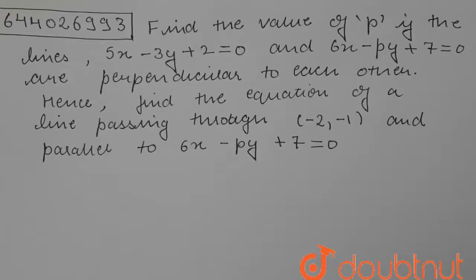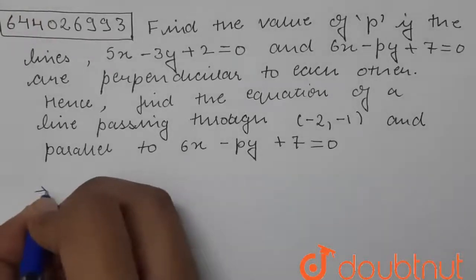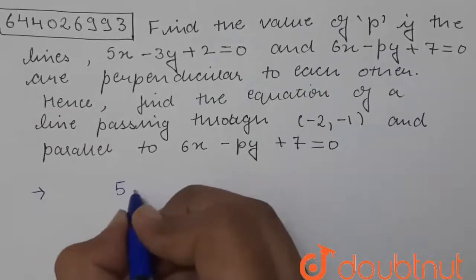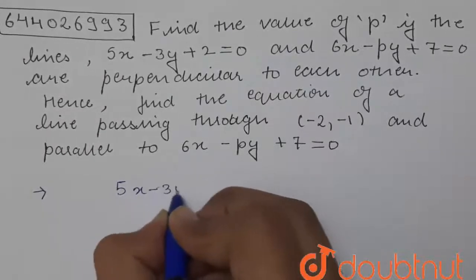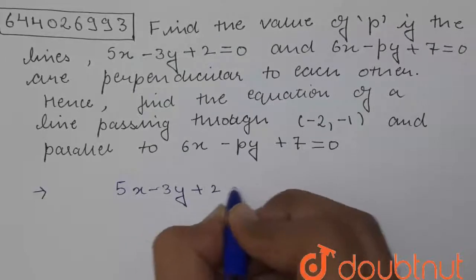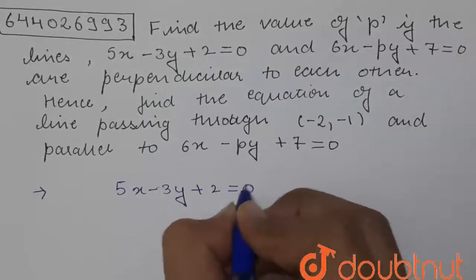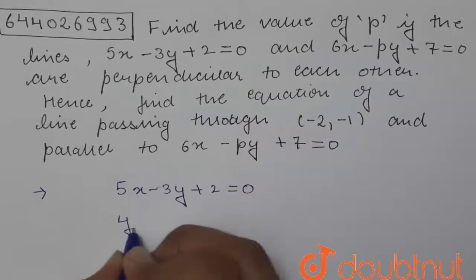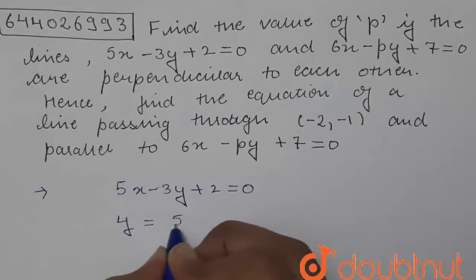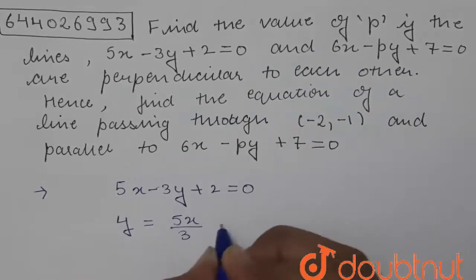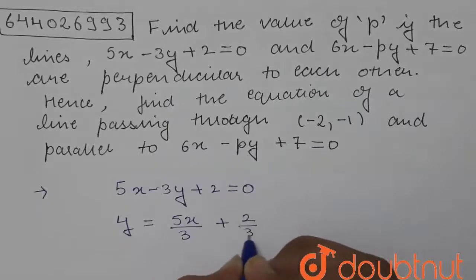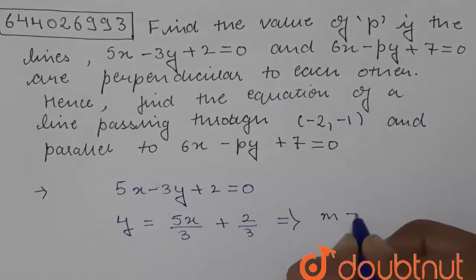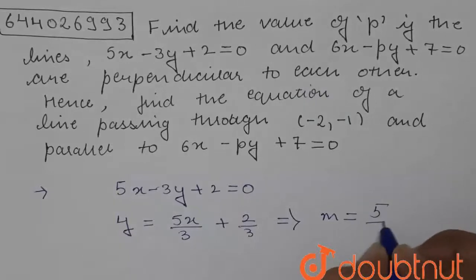So let us start with the solution. We are given 5x - 3y + 2 = 0. By slope-intercept form, we can write it as y = (5x/3) + (2/3). So from here, we can say that m₁ = 5/3.